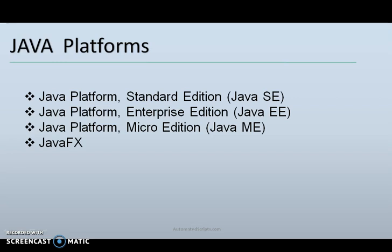Then comes Java Platform Enterprise Edition, that is Java EE, with specifications for enterprise features such as distributed computing and web services. Then Java Platform Micro Edition, or Java ME, is a computing platform for development and deployment of portable code for embedded and mobile devices like microcontrollers, sensors, gateways, mobile phones, personal digital assistants, TV set-top boxes, and printers.